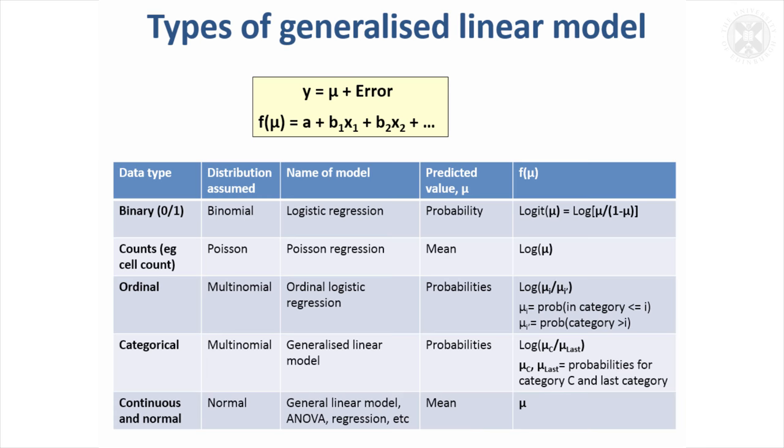We've got binary data logistic regression—that's one type of generalized linear model. Count data often follows a Poisson distribution with a different link function, simply the log of the expected value. We've looked at ordinal logistic regression where we partition the data in different places using the logit approach.